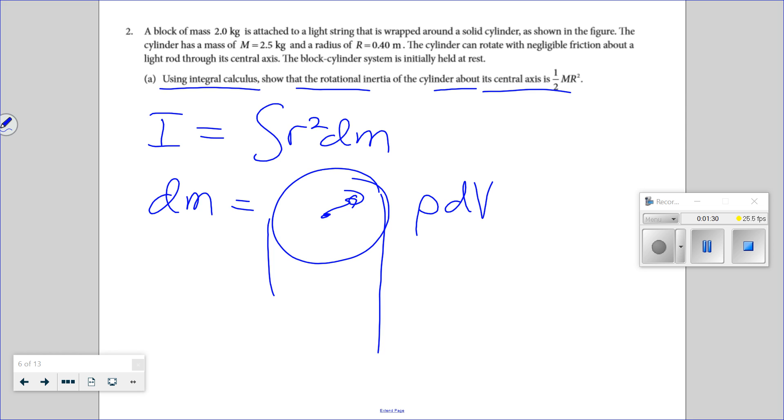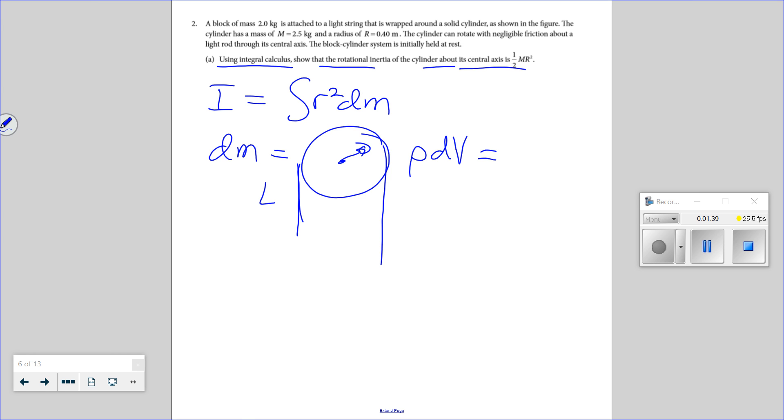It's R squared DM. What's a DM? It's the density of the cylinder times DV. But the cylinder is going to have a length. I need to do this whole derivation. It's one half MR squared. Yeah, so I have a cylinder. I need the volume. It's going to have a length.